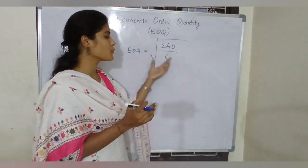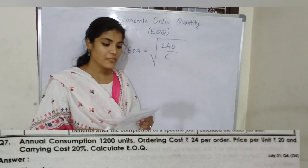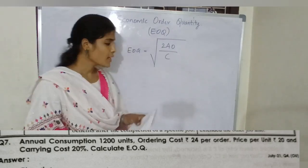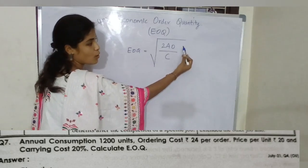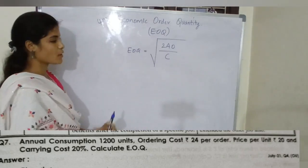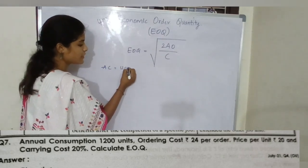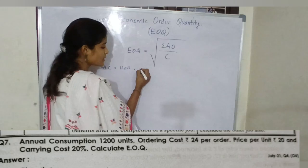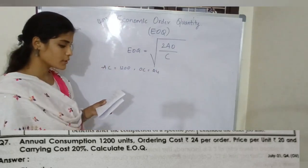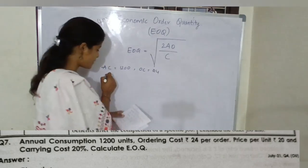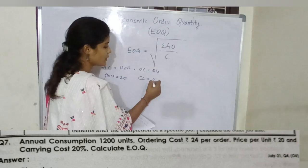You just need to substitute the data into the formula. In the question, A is nothing but annual consumption, O is nothing but ordering cost, and C is nothing but carrying cost. In this question, annual consumption is 1200 units, ordering cost is 24 per order, price per unit is 20, and carrying cost is 20 percent.